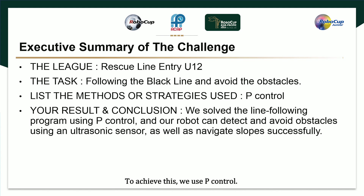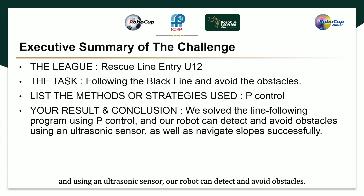To achieve this, we use P control. With P control, we successfully solved the line-following problem. Using an ultrasonic sensor, our robot can detect and avoid obstacles. It can also navigate slopes effectively.